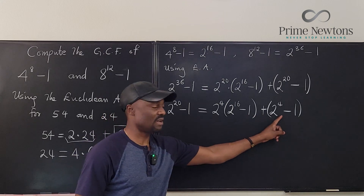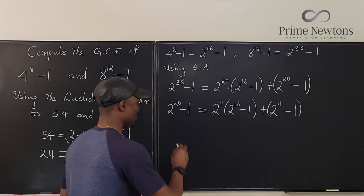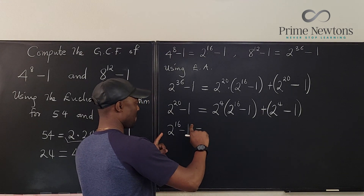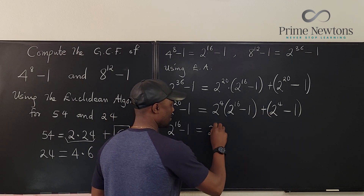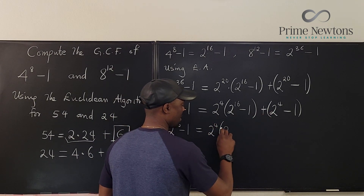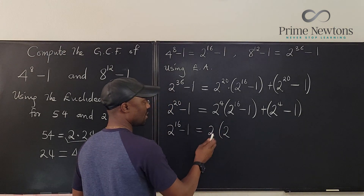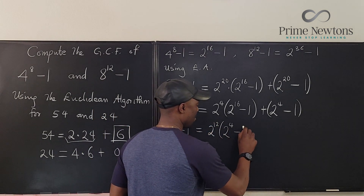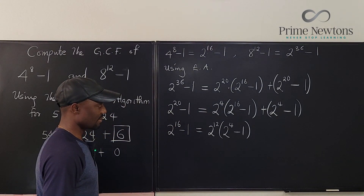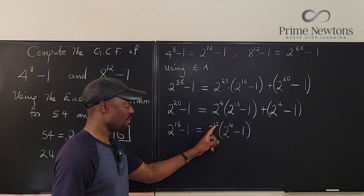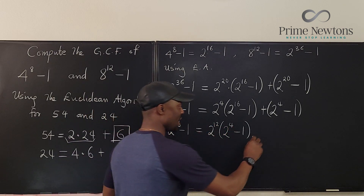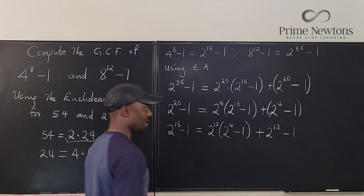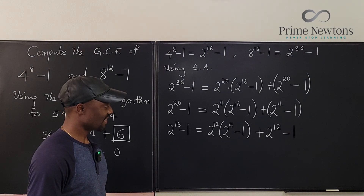Now 2 to the 16th minus 1 is bigger, so I write it in terms of 2 to the 4th minus 1. How many times does 2 to the 4th go into 2 to the 16th? That's 2 to the 12th. So: 2 to the 12th times (2 to the 4th minus 1) plus a remainder. Adding back 2 to the 12th and subtracting 1, the new remainder is 2 to the 12th minus 1. That's the problem with exponents — you have to keep following the steps until you finally get your answer.